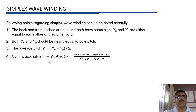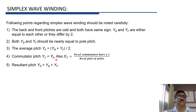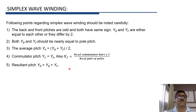In case of lap winding, which we have already studied, YC is equal to ±1. But in wave winding, YC is equal to YA. The resultant pitch YR in simplex wave winding is YB + YF, whereas in lap winding it is YB − YF.